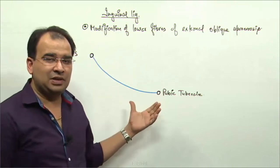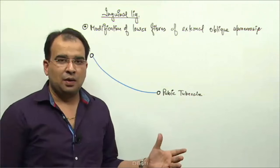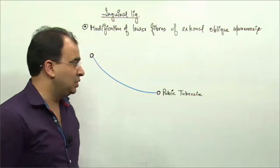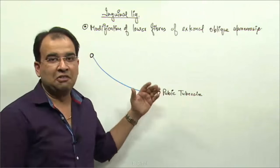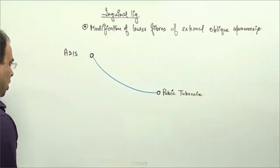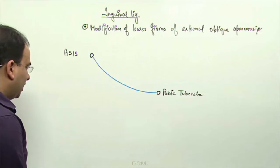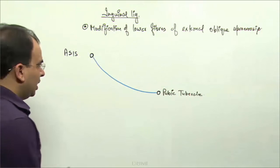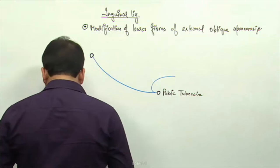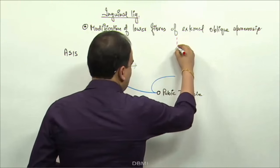Now, this inguinal ligament has certain modifications, and we will be seeing those modifications in relation to the inguinal canal, the linea alba, and the femoral canal. These modifications of the inguinal ligament are very important. Let me start with the modification called the reflected part of inguinal ligament, which is attached to the linea alba.